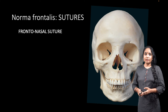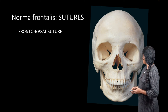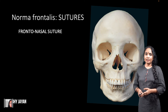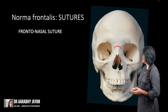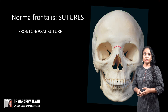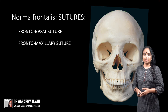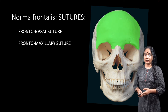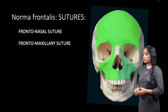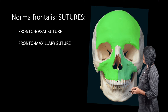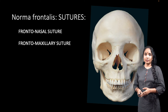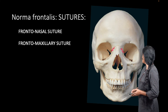Between the frontal and the nasal bones we have the frontonasal suture. Between the two nasal bones we have the internasal suture, and between the frontal and the maxillary we have the frontomaxillary suture — that is the frontal on top and the maxillary bones below.